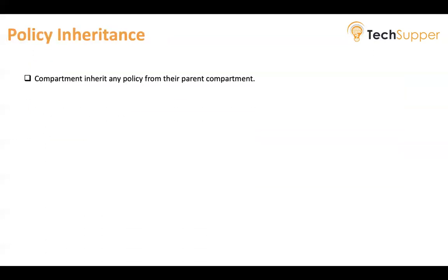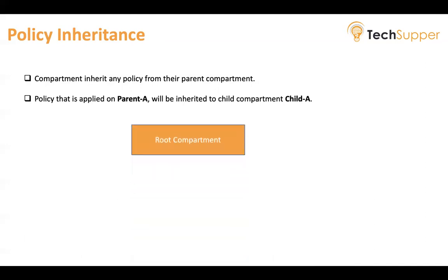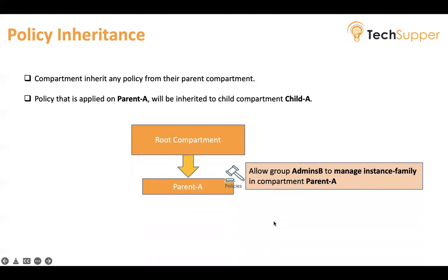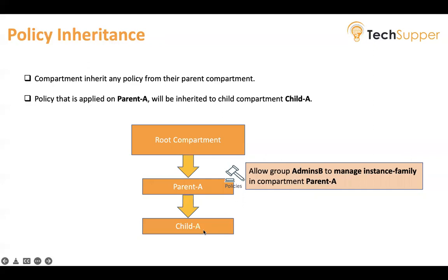Policy inheritance: a compartment inherits any policies from its parent compartment. For example, if you write a policy on compartment parent-a, and it has a child compartment child-a, all policies written on parent-a will be inherited by child-a. So if you write 'allow group admins-b to manage instance-family in compartment parent-a,' the group admin-b can also manage the instance family in child-a compartment. That's all about policies — thank you, bye.